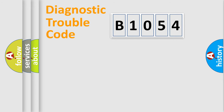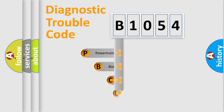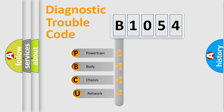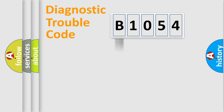Let's look at the history of diagnostic fault code composition according to the OBD2 protocol, which is unified for all automakers since 2000. We divide the electric system of an automobile into four basic units: Powertrain, Body, Chassis, and Network.